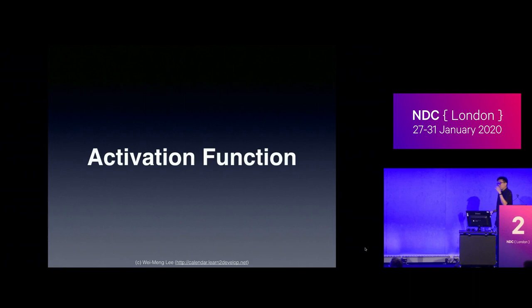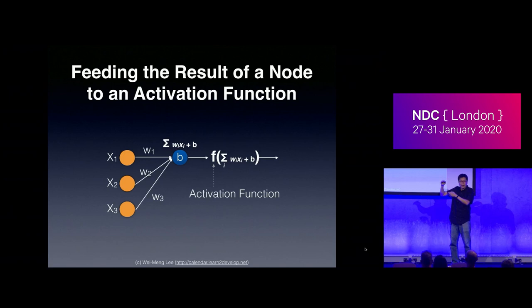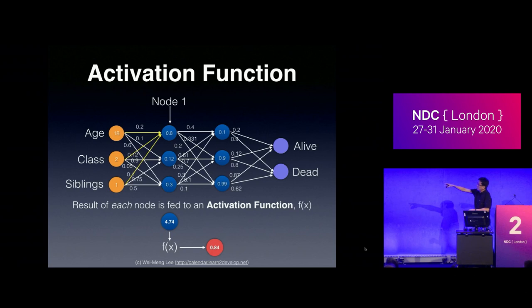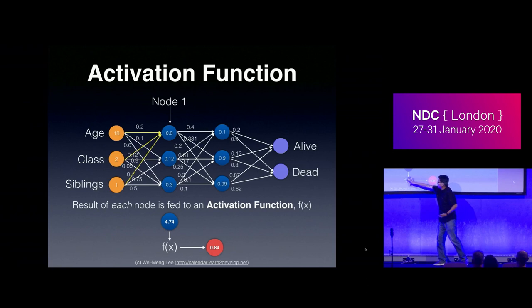After multiplying the values and adding the bias, you feed the result into an activation function. An activation function transforms the result of multiplying weights plus bias into a new value. For example, if after multiplying weights plus bias I get 4.74, I put it into an activation function and get a new value of 0.84. There are many different types of activation functions.